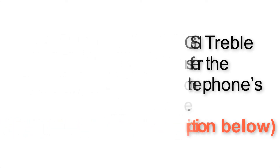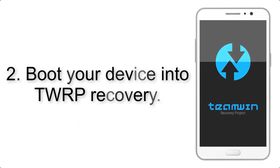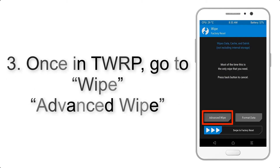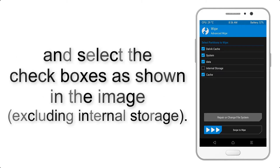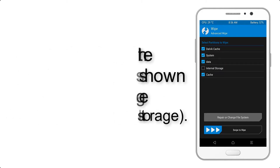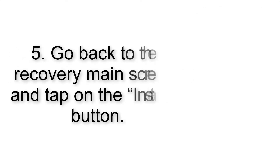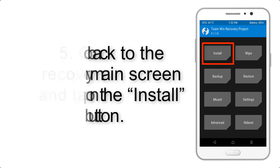Step 2: Boot your device into TWRP recovery. Once in TWRP, click on Wipe, then Advanced Wipe, and select the checkboxes as shown in the image, excluding internal storage. Step 4: Swipe the button to wipe the device.